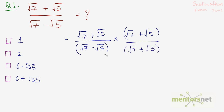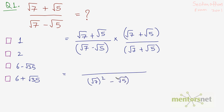In the denominator we have (√7 - √5)(√7 + √5), which is similar to (a - b)(a + b). So the denominator becomes a² - b², which gives us (√7)² - (√5)² = 7 - 5.